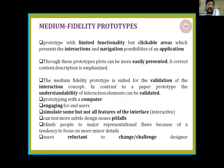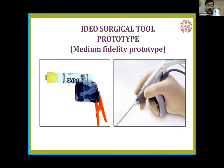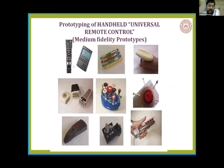In medium fidelity, it has clickable areas; we can interact, navigate small things, and easily engage our users. We can simulate — not all features but small features — to show the user what we want to do. For example, here are some remote control prototypes. Three cars have been used on a desktop to create a small remote control system — just to show the basic outer structure and basic functionality of the product they want to create.